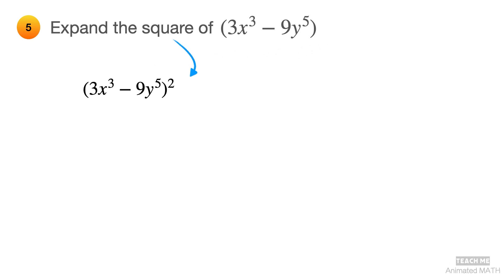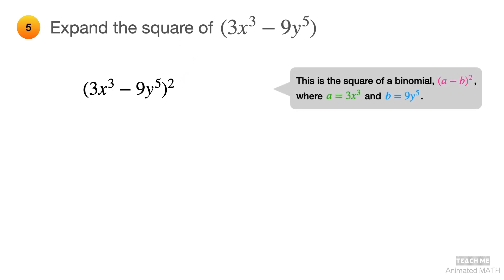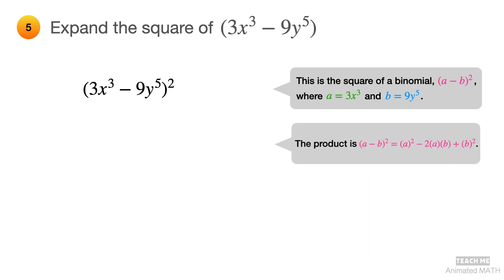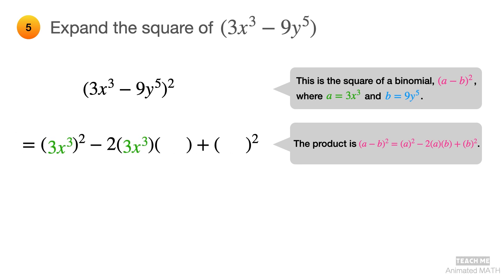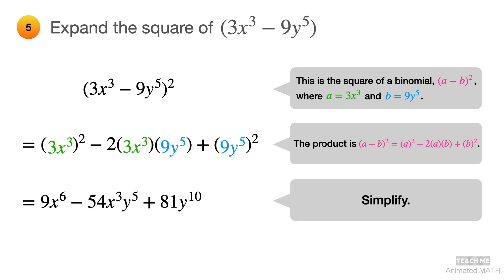First, square the binomial. Then use the perfect square subtract times subtract pattern, which is a minus b squared, but with a equal to 3x cubed and b equal to 9y raised to 5. Its product is a squared minus 2ab plus b squared. So substitute 3x cubed for all a's and substitute 9y raised to 5 for all b's. And the final answer is 9x raised to 6 minus 54x cubed y raised to 5 plus 81y raised to 10.